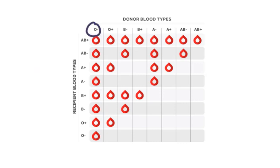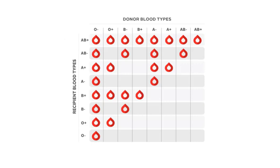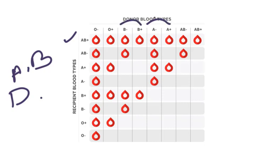That is why O negative blood group is called the universal donor. On the other hand, AB positive blood group has A, B, and D antigens, so it lacks anti-A, anti-B, and anti-D antibodies. If any of A, B, AB, or O blood is transfused into this person, there will be no reaction, because AB positive group has no antibodies. For this reason, AB positive group is called the universal recipient.